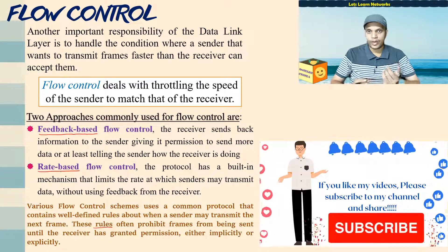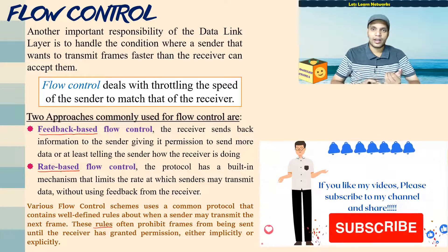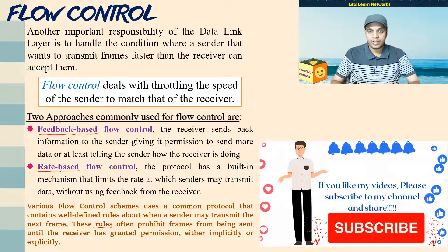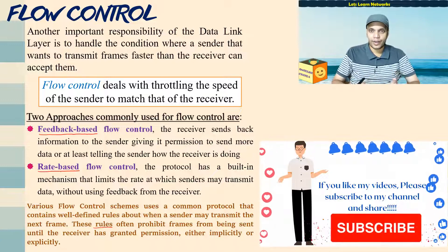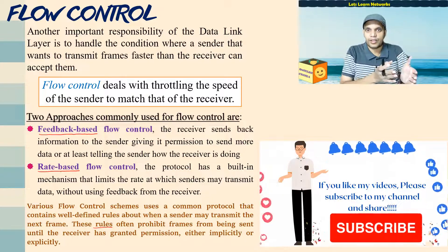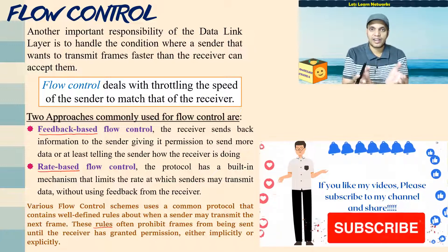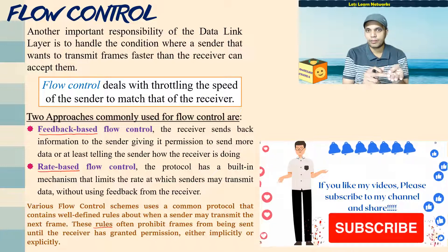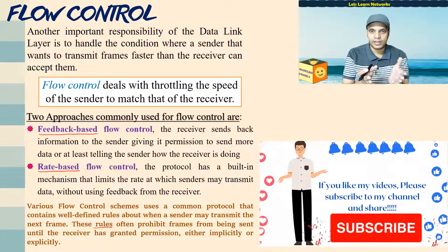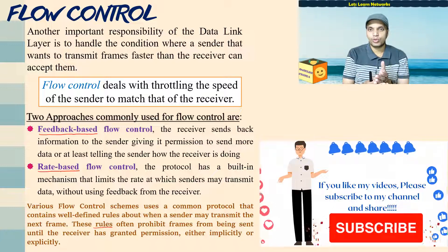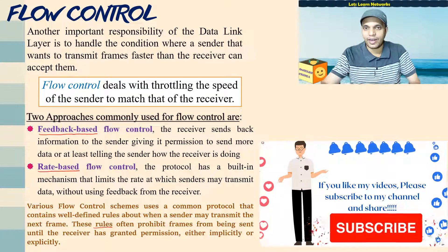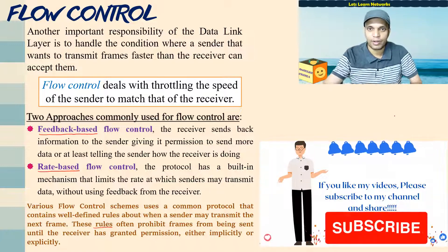So those are the three design issues of the data link layer. First, the different types of services offered by the data link layer to the network layer. Second, framing techniques — how the sender conveys to the receiver where the frame starts and ends, with four methods studied. Third, error control and flow control — how the data link layer handles errors and manages transmission rate. If you like the videos, do share, subscribe, and share with your friends. Thank you very much for watching. Take care.